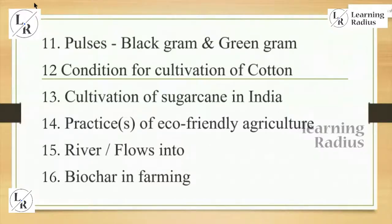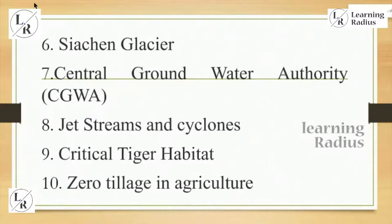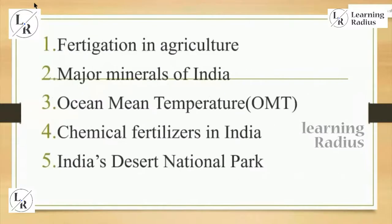Looking at the last slide: pulses, black gram and green gram — agriculture; condition for cultivation of cotton — agriculture; cultivation of sugarcane India — agriculture; practices of eco-friendly agriculture — agriculture; biochar in farming — agriculture. Out of the 16 topics, you can see eight questions are related to agriculture. The first question is fertigation in agriculture.